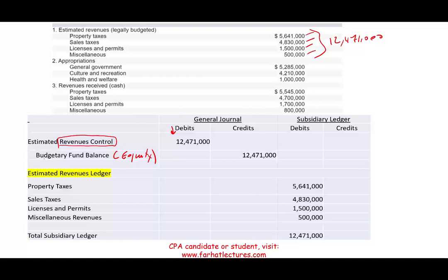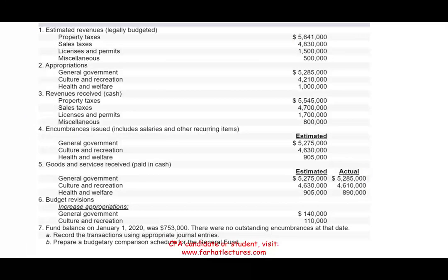At year-end we close the books by doing the exact opposite — removing estimated revenue for the same amount regardless of actual revenue collected, because this is a budgetary account. We also have an estimated revenue subsidiary ledger where we debit the various revenue categories: property taxes, sales tax, license, and miscellaneous. Remember, this is the estimated revenue ledger, not the actual revenue ledger.